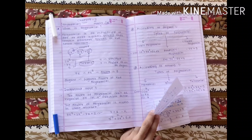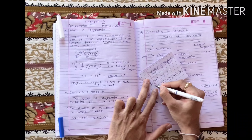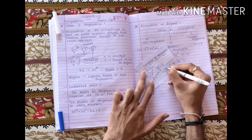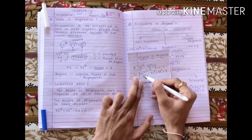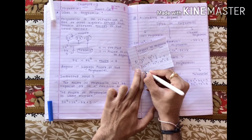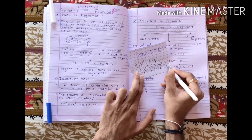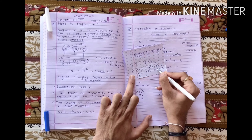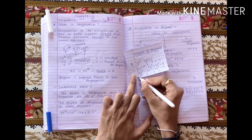Let us understand with one or two more examples. In the polynomial 2x² minus 3x plus 5, the first term's power is 2, the second term's power is 1, and there is no variable in the last term so its power is 0. The highest power is 2, so the degree is 2. Similarly, for 4x⁴ minus 3x³ plus 4x² plus 9 — the first term's power is 4, second term's power is 3, third term's power is 2, and the last term has power 0. So the degree of this polynomial is 4.